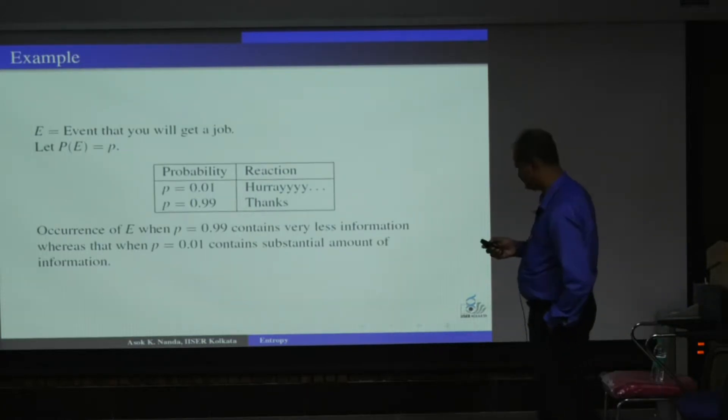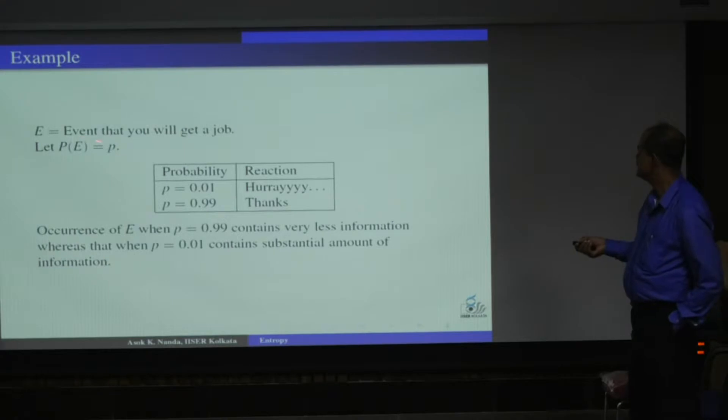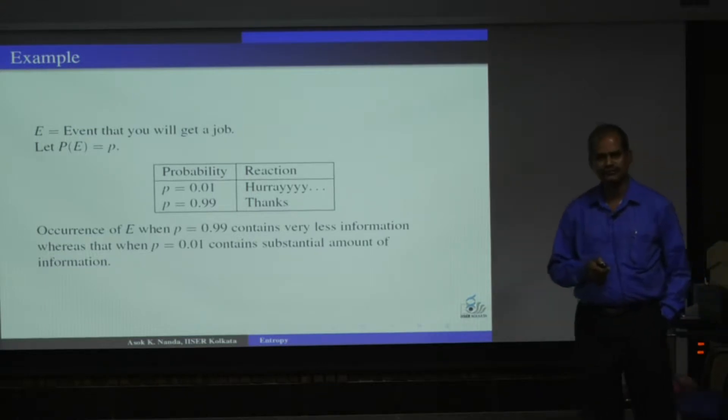Now let us see this particular example. Suppose E is one event, the event is that you will get a job, and P is the probability of that. If P is 0.01, that means you have very rare chance to get the job. And one friend comes to me and tells that you have got the job. Then eventually, this will be your reaction: I didn't expect that I will get the job. But if my probability is 0.9, I was almost sure that I will get it. And if you tell me that you have got the job, I'll say, OK, thanks, because I was very much sure that I will get the job.